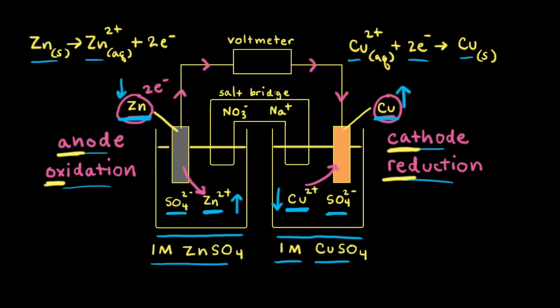The salt bridge connects the two compartments and contains an electrolyte solution such as sodium nitrate, often in a gel or paste form to prevent early mixing. The solutions in each half cell must remain electrically neutral, and the purpose of the salt bridge is to balance the charges. In the half cell on the left, as the concentration of zinc two plus ions increases, the negatively charged nitrate anion moves from the salt bridge into the left half cell to balance the increased positive charge.